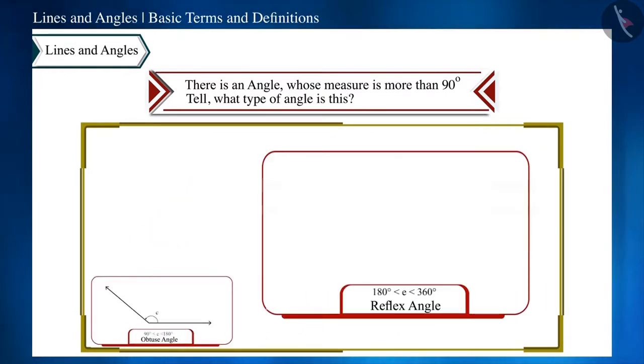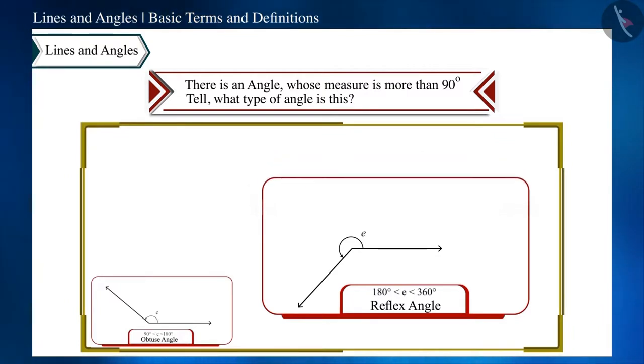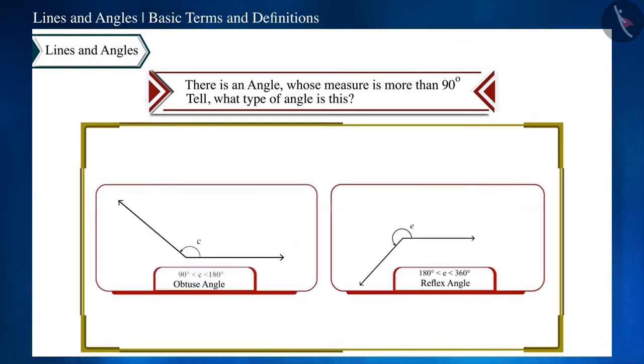But there is no such condition given in the statement. That is, its measure can be more than 180 degrees, and if this happens, then it will be a reflex angle. Friends, with this statement, we cannot specify the type of this angle. All we can say is that it will either be an obtuse or a reflex angle because the measure of both these angles is more than 90 degrees.